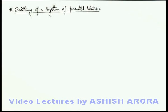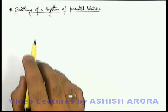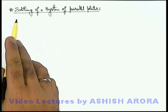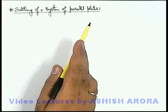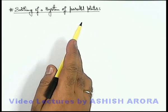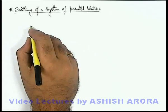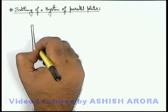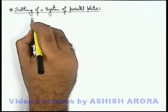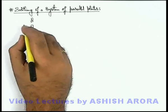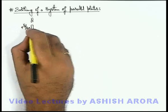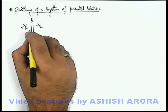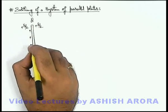Let's discuss another important concept related to the parallel plate system, that is earthing of a system of parallel plates. Consider a single metal plate which is very large and charged with a charge q. We already discussed that it'll be divided equally on the two faces, that is plus q by 2 and plus q by 2.